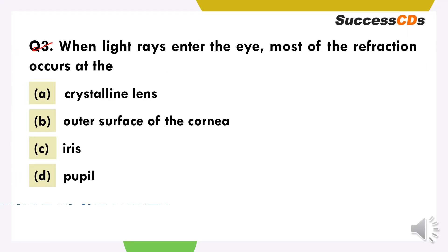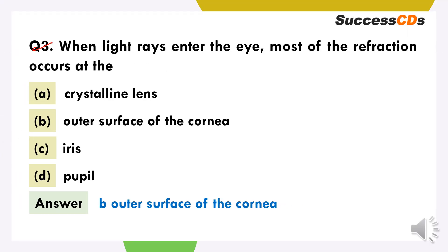When light rays enter the eye, most of the refraction occurs at the: option A, crystalline lens; option B, outer surface of the cornea; option C, iris; option D, pupil. The correct answer is option B — jab bhi light humari eyes ko enter karti hai, sab se zaada refraction hoti hai humare outer surface of cornea pe.